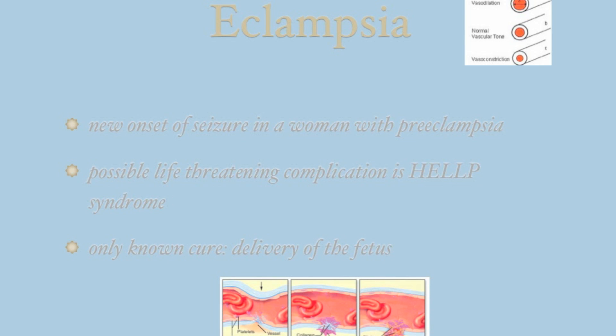The patient may also develop pulmonary edema, heart failure, and/or have a cerebral hemorrhage. Poor perfusion to the kidneys results in oliguria, which is defined as a urine output of less than 30 mLs per hour.